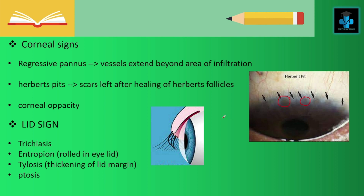Moving on to the lid signs. First we have trichiasis — where the eyelashes are touching over the eyeball. We also have entropion, otherwise known as the rolled-in eyelid, where the eyelid rolls inwards. Then we have tylosis, which is thickening of the lid margin, and ptosis, which means drooping of the eyelid.